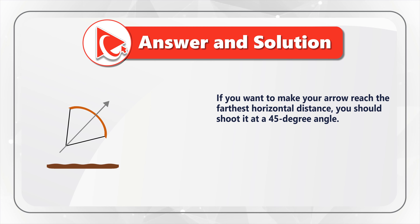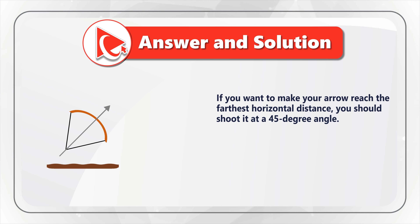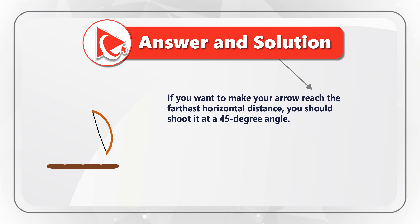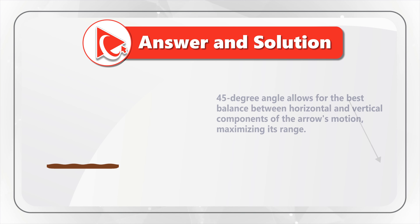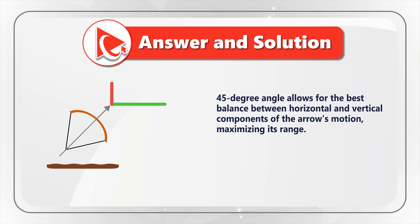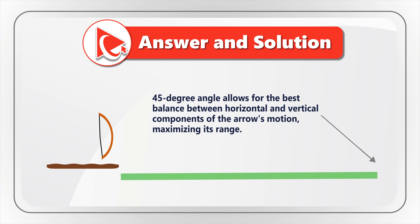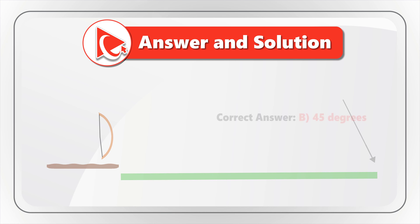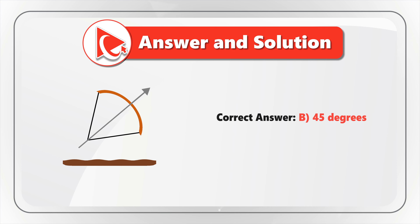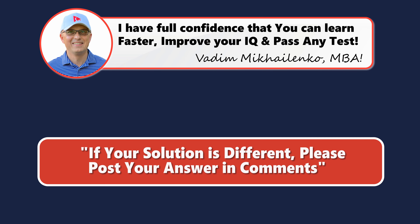Which brings us to the 45-degree angle solution. If you want the arrow to reach the farthest horizontal distance, you should shoot it at 45 degrees. A 45-degree angle allows for the best balance between horizontal and vertical components of an arrow's motion, maximizing its range. So the correct answer is Choice A, 45 degrees. If you didn't get the same answer, please make sure to share your thoughts and rationale in the comments so we can all learn.